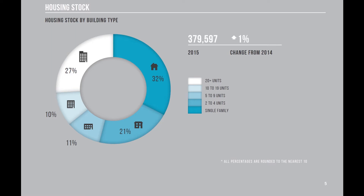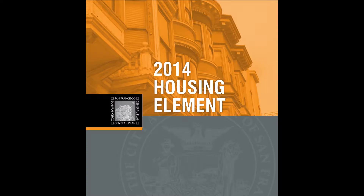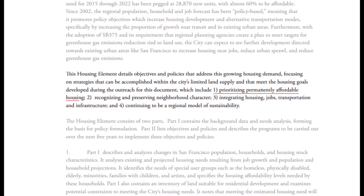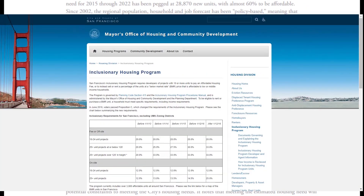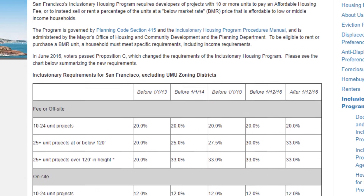At its full capacity, the 1,134 acres of undeveloped land can create 33,000 new housing units. The plan also recognizes permanently affordable housing as the top priority for the housing element. Through a series of programs, the city encourages more below-market-rate housing to be built for middle and lower-income households.